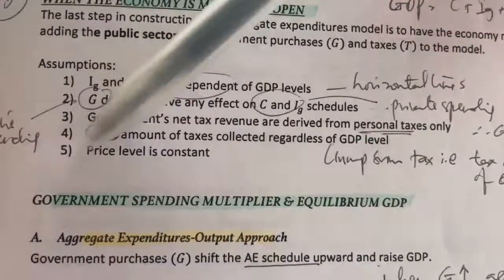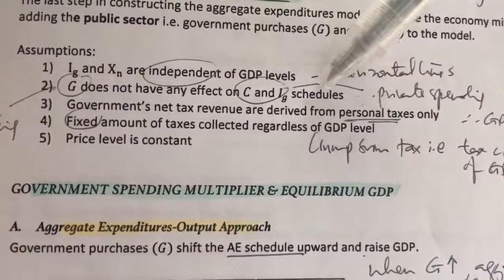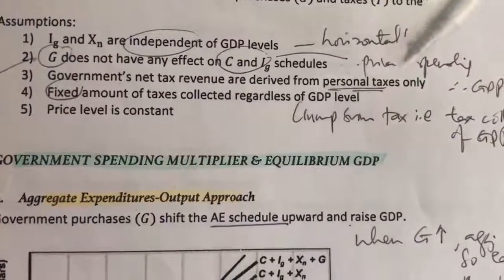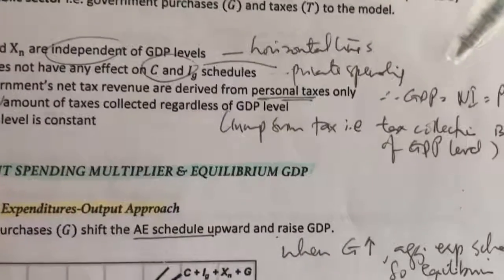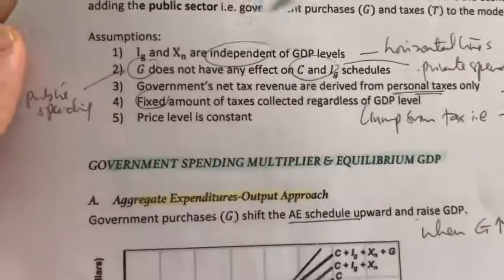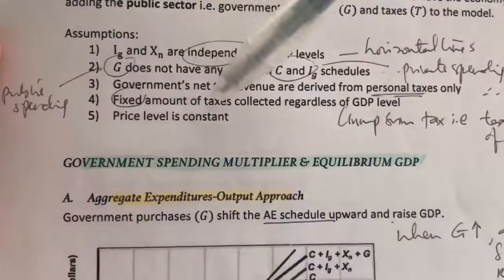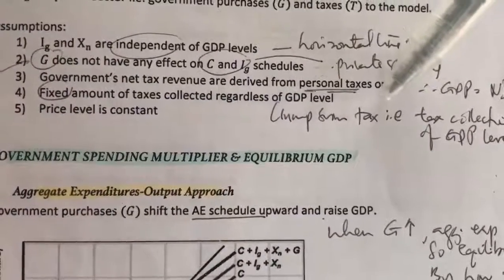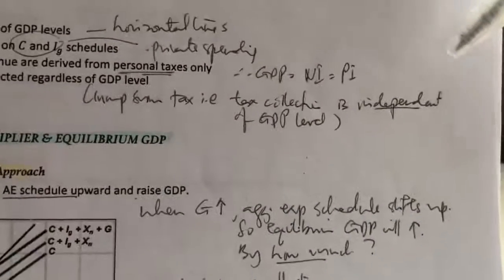In other words, the public sector has nothing to do with private spending. Thirdly, we assume that the government's tax revenue is derived mainly from personal taxes only. The implication is that GDP is equivalent to national income and personal income. Number four, we assume that a fixed amount of taxes — a lump sum tax — is collected regardless of GDP level, meaning tax collection is independent of GDP.